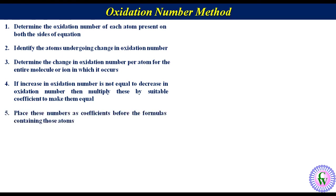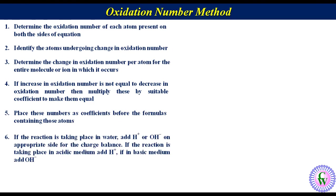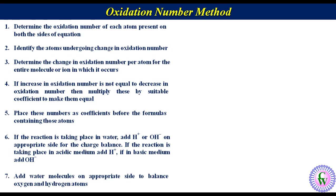Place these numbers as coefficients before the formulas containing those atoms. If the reaction is taking place in water, add H⁺ or OH⁻ on the appropriate side for charge balance — H⁺ for acidic medium and OH⁻ for basic medium. Lastly, add water molecules on the appropriate side to balance the oxygen and hydrogen atoms.